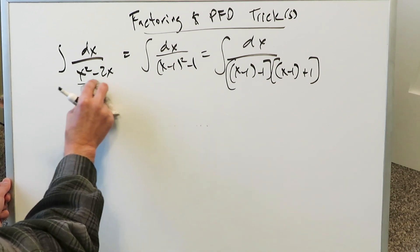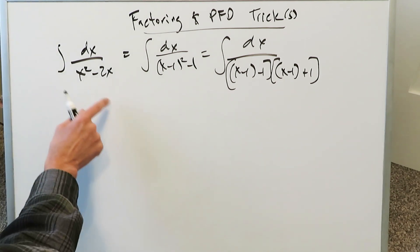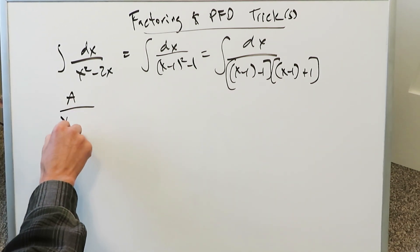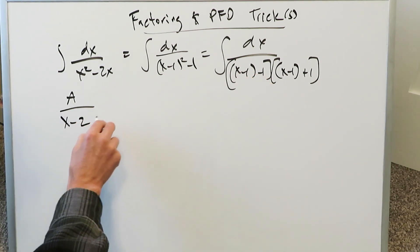Now integrating that using partial fraction decomposition is easy. You have an expression here with two factors. Therefore, you're looking at two items in your template. One is x minus 1 minus 1, but open it up. x minus 1 minus 1 is x minus 2.